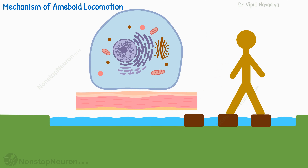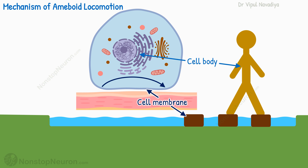Amoeboid movement of the cell occurs in a similar fashion. In this, the cell membrane moves how the bricks were moved — it jumps from backward to forward. And the cell body moves how you moved — it slides over the jumping membrane. So basically, you need to understand two things in amoeboid movement: how the membrane jumps forward, and how the cell body slides over it.